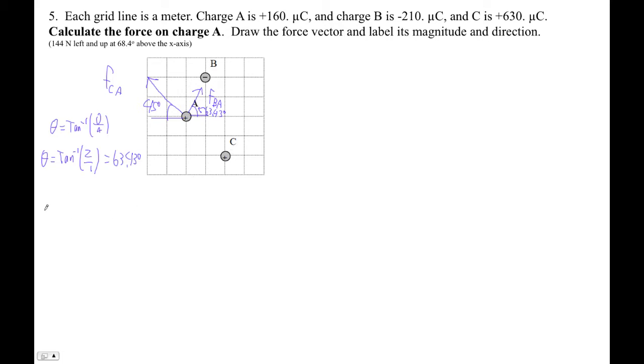So now let's find the force of B on A, just the magnitude. That's going to be KQQ over R squared. So that's 8.99 E9 Newton meters squared per Coulomb squared.